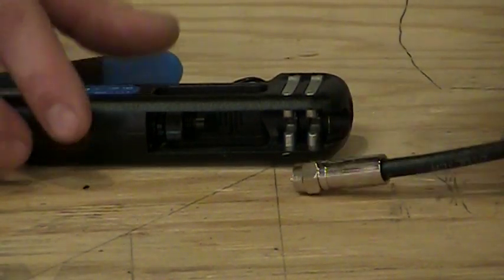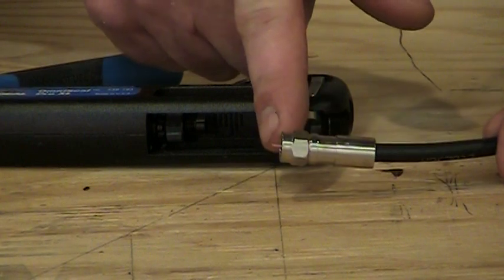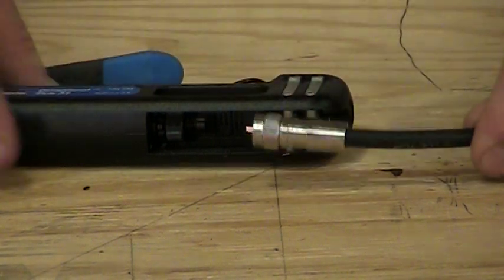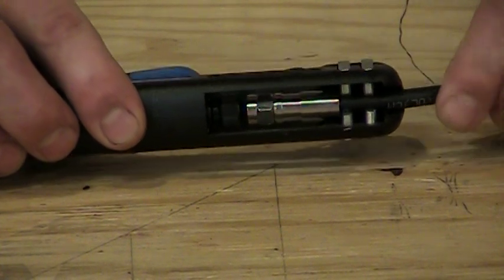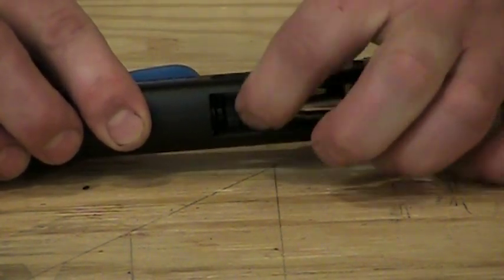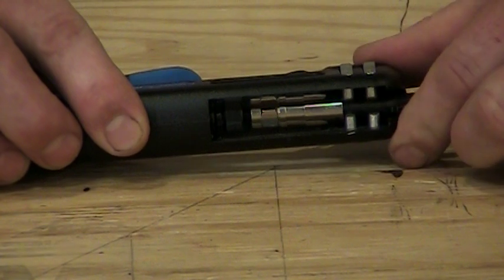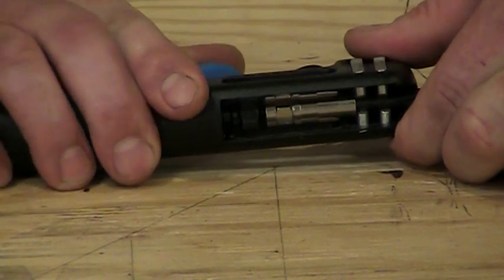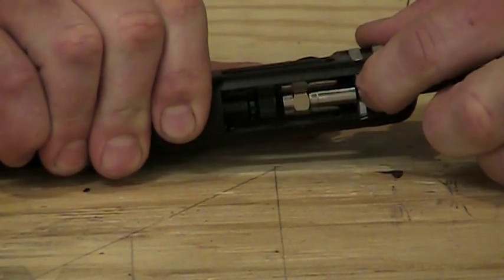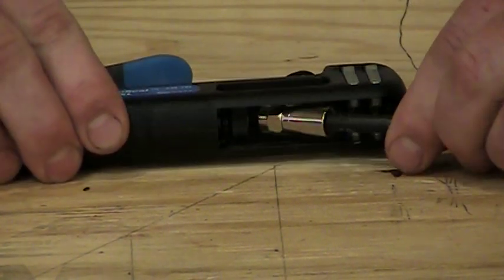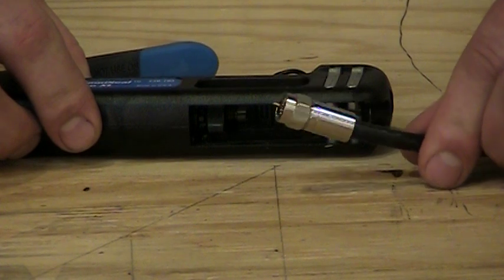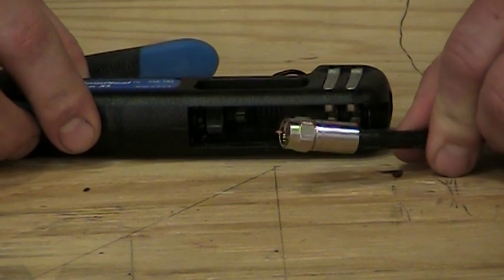And so the way we're going to load this in here, we're going to take the center conductor on the connector and it loads right into an opening in the front of this ram. And then we simply drop the connector in and now the connector is loaded between the ram and the clips right there. And we simply just squeeze the handles down and it compressed the connector like we talked about. And when we release the tool, we can now remove the connector and there is a properly compressed F connector.